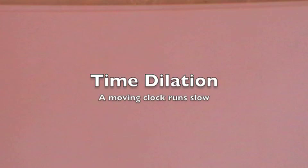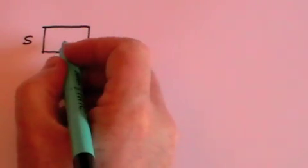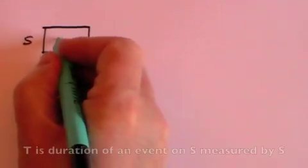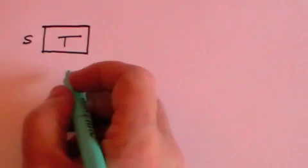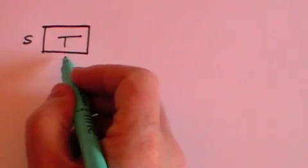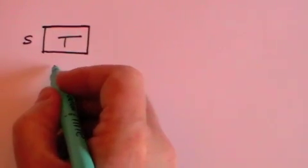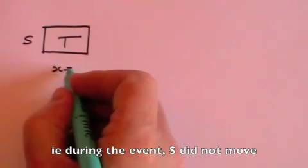We now move on to a concept called time dilation. Let's take an event that takes place on S's frame of reference and let's suppose that its duration is t seconds. Now S is entitled to claim that he is stationary, and that therefore there was no distance traveled. x is therefore zero.